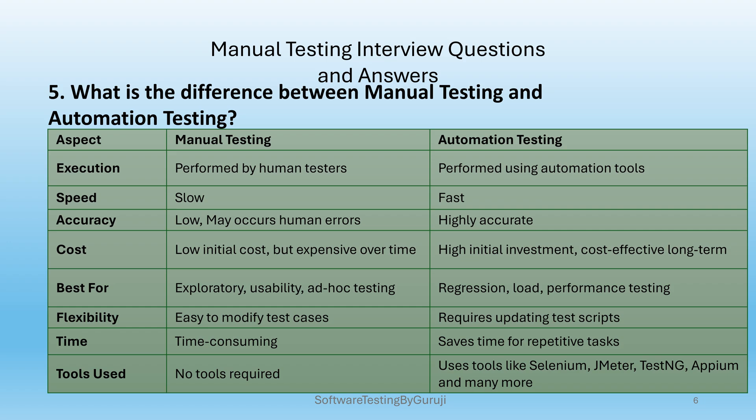Manual testing flexibility is easy — test cases can be modified easily. Automation testing flexibility requires updating test scripts. Manual testing is time consuming because all tasks are performed manually. Automation testing saves time for repetitive tasks since the automation script runs the test code. Manual testing requires no tools, while automation testing uses tools like Selenium, JMeter, TestNG, and many more.